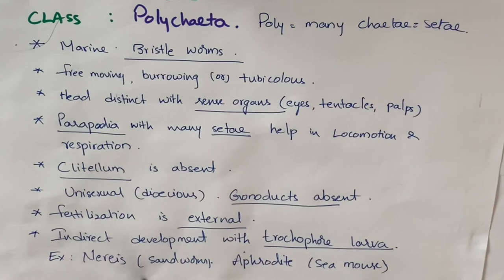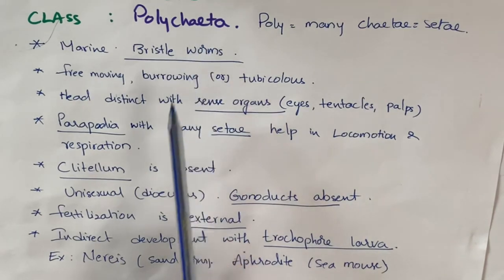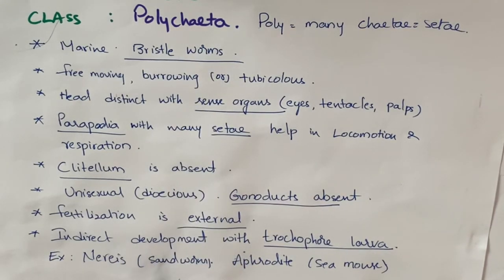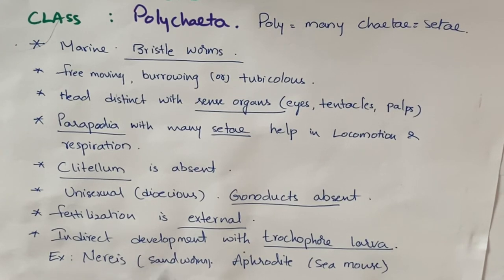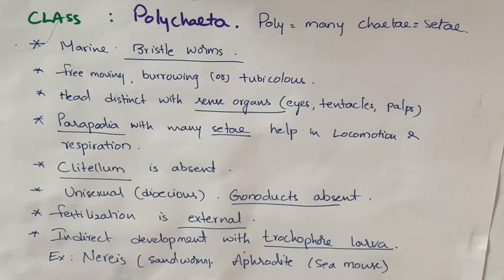These are some of the important characters of Polychaeta, also important for board examinations for four marks. Examples of Polychaeta are Nereis, commonly known as the sandworm, and Aphrodite, commonly known as the sea mouse.